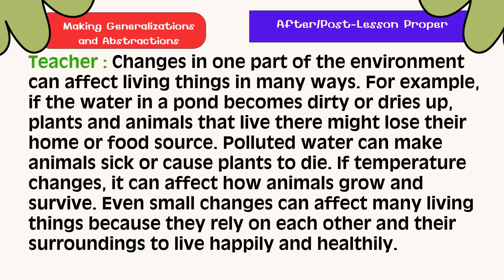Changes in one part of the environment can affect living things in many ways. For example, if the water in a pond becomes dirty or dries up, plants and animals that live there may lose their home or food source. Polluted water can make animals sick or cause plants to die. If temperature changes, it can affect how animals grow and survive. Even small changes can affect many living things because they rely on each other and their surroundings to live happily and healthy.